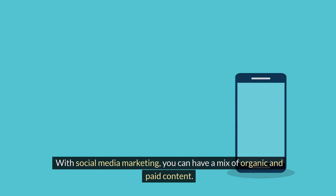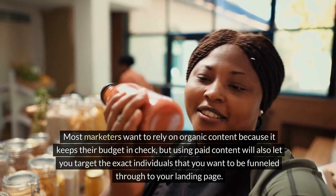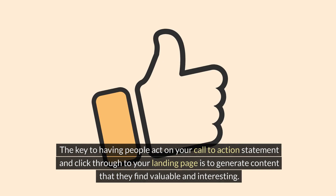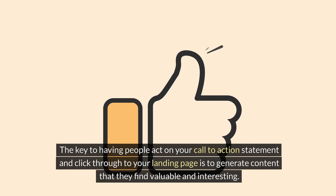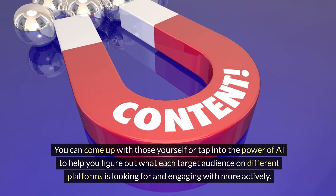With social media marketing, you can have a mix of organic and paid content. Most marketers want to rely on organic content because it keeps their budget in check, but using paid content will also let you target the exact individuals that you want to be funneled through to your landing page. You can tap into the power of AI to help you figure out what each target audience on different platforms is looking for and engaging with more actively.